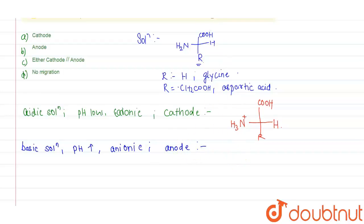At this form it exists as: here it will be COO-, here it will be NH2, here it will be H and here it will be R. It exists as this form in any basic solution.